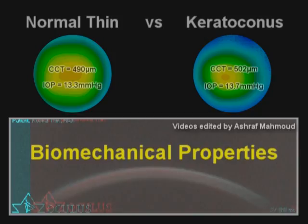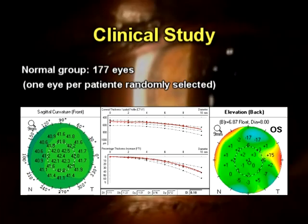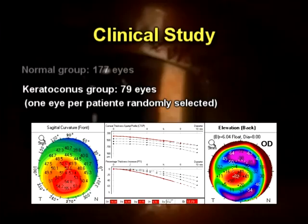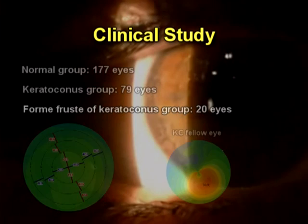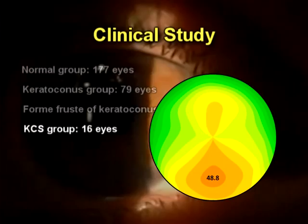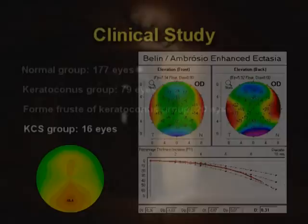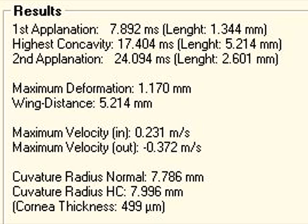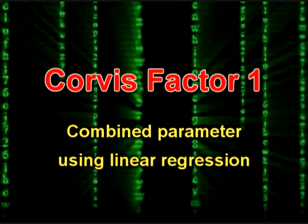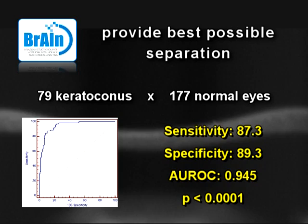This difference is due to the biomechanical properties of each cornea. A clinical study involved one eye randomly selected of 177 patients with tomographically normal corneas, 79 patients with bilateral keratoconus, 20 eyes with normal topographic patterns from cases with very asymmetric keratoconus, and 16 eyes from 16 patients with topographic patterns suspicious of keratoconus, called group KCS, but with documented stability and normal tomography. The intraocular pressure, applanation, and deformation responses were extracted from the CORVIS data. CORVIS factor 1 was calculated from the combination of these parameters using linear regressions in order to provide best possible separation of keratoconus and normal subjects.